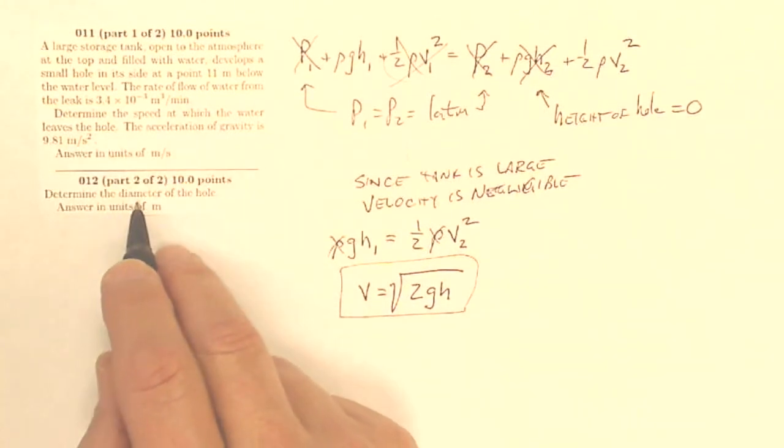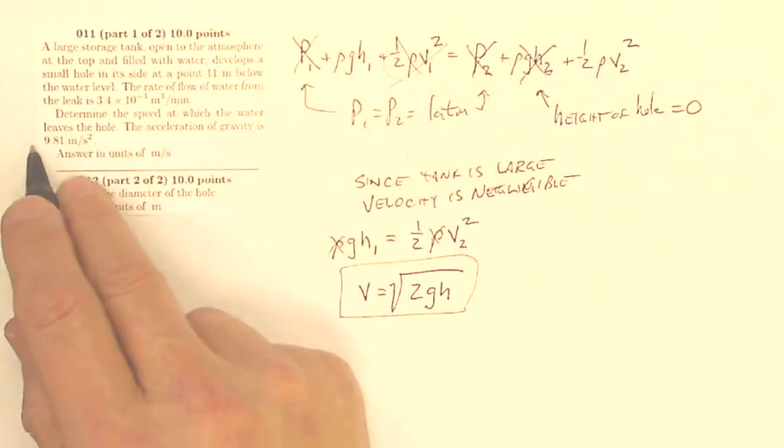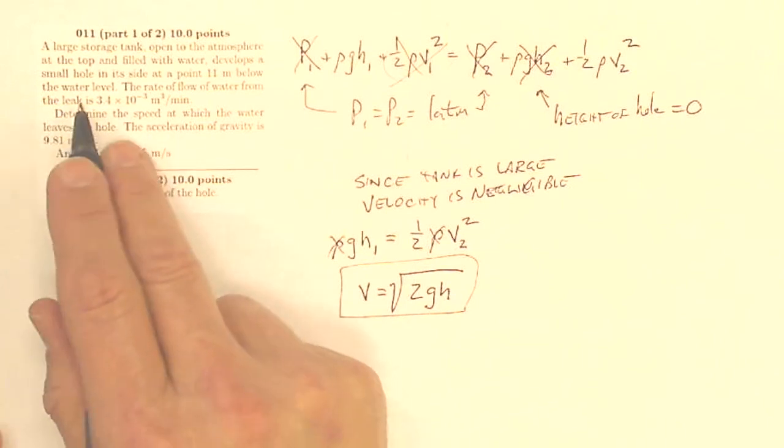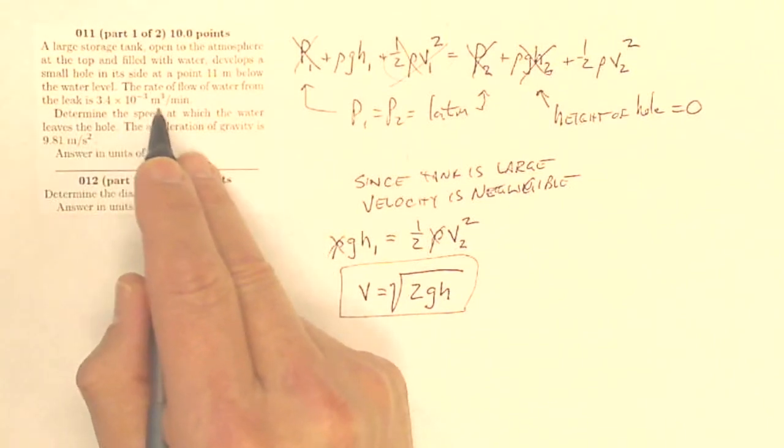Now determine the diameter of the hole. Now I have to use my flow rate, because the rate of flow of water is 3.4 times 10 to the minus third cubic meters per minute.